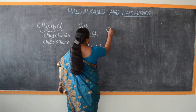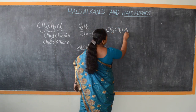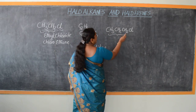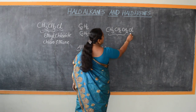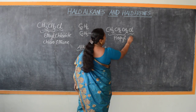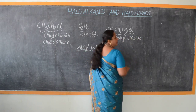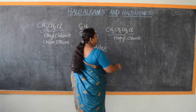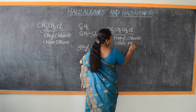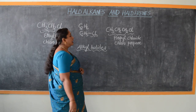Let us look at another example: CH3-CH2-CH2-Cl. This group is the propyl group with Cl attached. Therefore, its trivial name is propyl chloride, and its IUPAC name is chloropropane. Like this, we can go on with many examples of alkane derivatives containing a halogen.